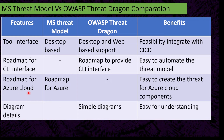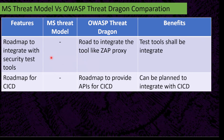Microsoft Threat Model has a roadmap for Azure cloud components, making it easy to create threat models for Azure cloud infrastructure. For diagram details, OWASP Threat Dragon provides simple diagrams that are easy to understand.